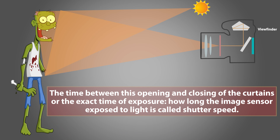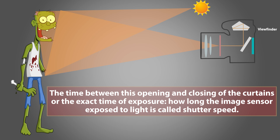The time between this opening and closing of the curtains — the exact time of exposure, how long the image sensor is exposed to light — is called shutter speed. It is also a way you can creatively blur or freeze motion in your composition.